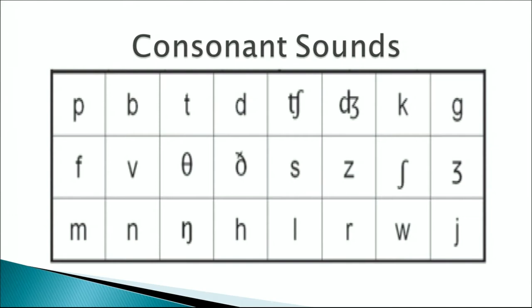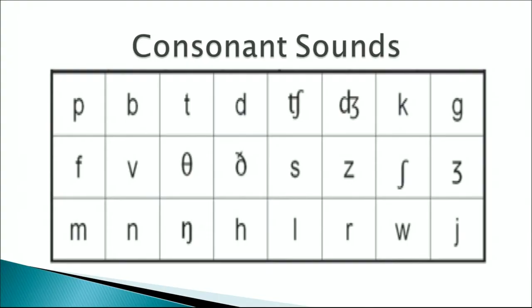The zh sound, as in leisure, pleasure, measure, and treasure, has its own IPA symbol. People sometimes confuse this and mispronounce it. This sound should be pronounced as zh — measure, leisure, treasure, pleasure — not with a sharp sh sound, as that would be a mispronunciation.